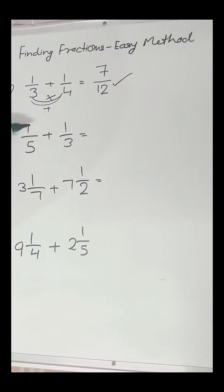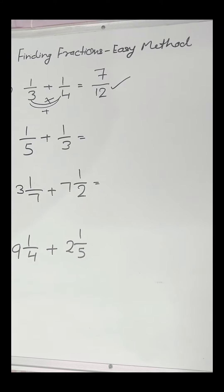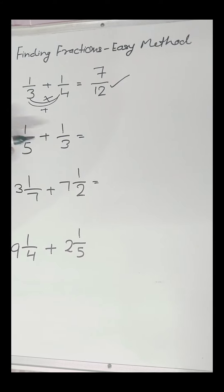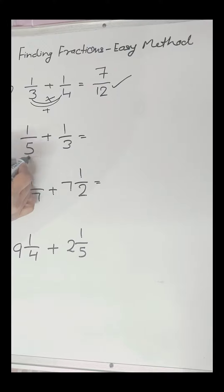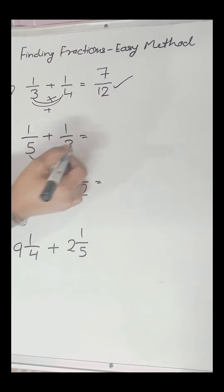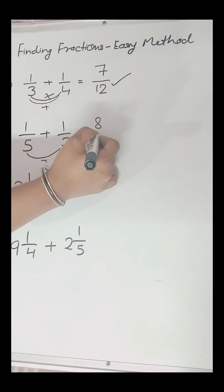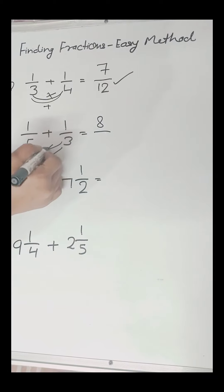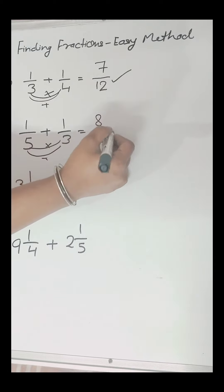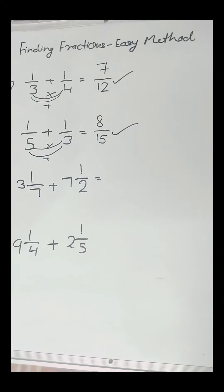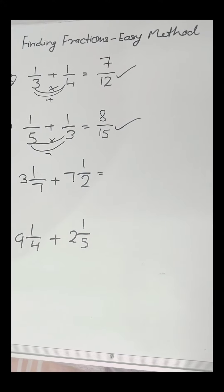Using the same method, we will solve the next question which is 1 upon 5 plus 1 upon 3. We will add 5 and 3 which equals 8. We will write 8, and now we will multiply 5 and 3 which equals 15. We will write 15 below 8. The answer is 8 upon 15.